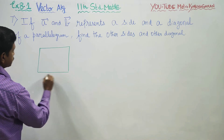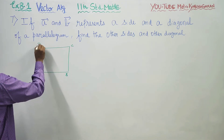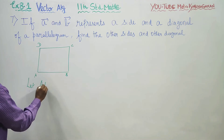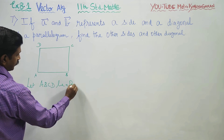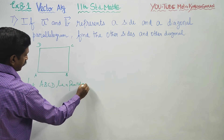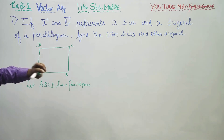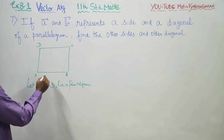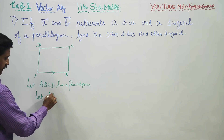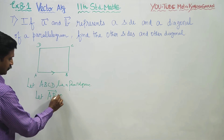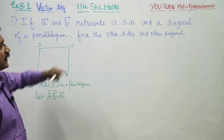Let us name this as A, B, C, D. Let ABCD be a parallelogram. Let A vector and B vector represent a side and a diagonal. So, let AB vector be equal to A vector — let it be a side — and B vector is the diagonal. So, AC is equal to B vector.